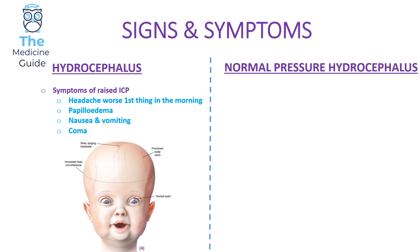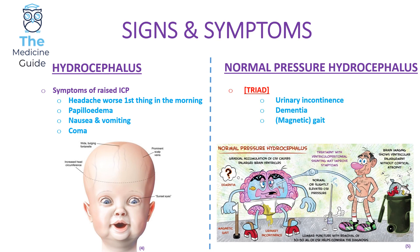Normal pressure hydrocephalus is classically found in elderly patients. These patients present with a triad of urinary incontinence, dementia, and the magnetic gait — where the patient's feet seem stuck on the floor with smaller strides. This triad is commonly referred to as 'wet, wacky and wobbly': wet for urinary incontinence, wacky for dementia and confusion, and wobbly for the magnetic gait. Whichever way you remember it, this is a very key classic description that crops up in SBAs.